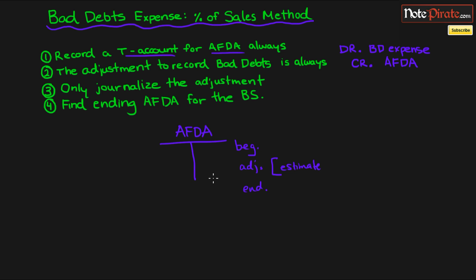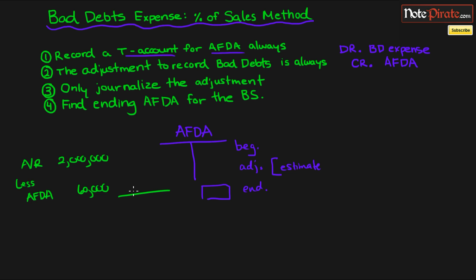Rule four: find the ending Allowance for Doubtful Accounts balance for the balance sheet. We need that number because when we have accounts receivables — let's say the balance is $2 million — we need to know the AFDA ending balance. If we don't know that, we can't figure out the net realizable value for receivables. So if the AFDA is $60,000, we can subtract it from gross receivables to get the net realizable value — for example, $1,940,000.